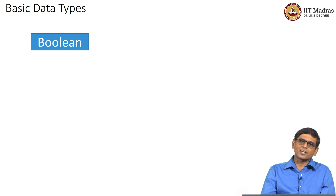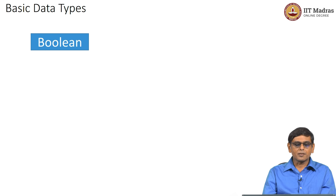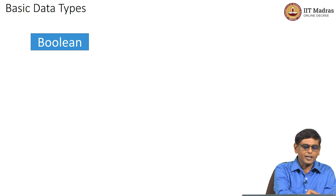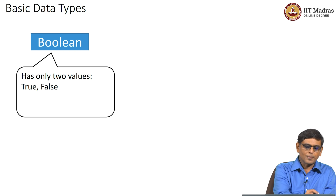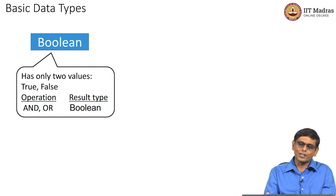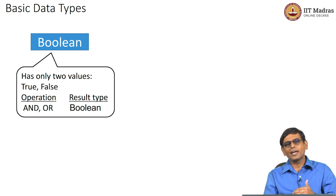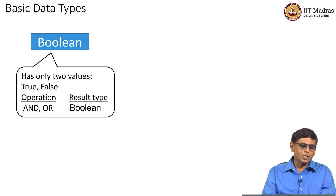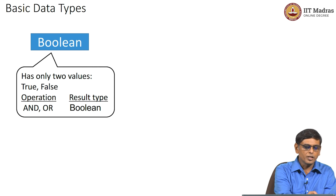Let us look at some basic data types we have already seen in our datasets. The first is the Boolean data type, which we used in our flowcharts. The Boolean data type has only two values: true and false. Operations on Boolean values include AND — checking whether both values are true, for example whether a card's gender is male and the date of birth is within a certain range — as well as OR, NOT, and other logical operations.